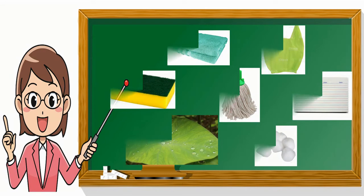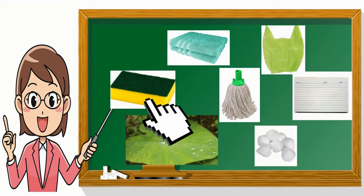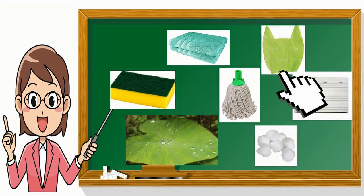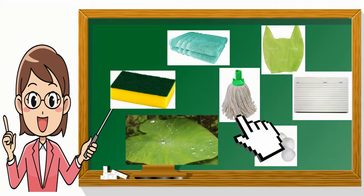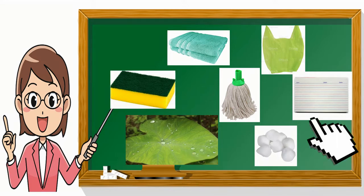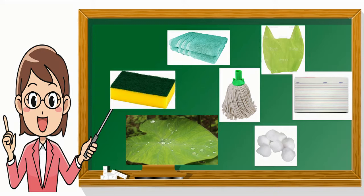Let's name them. We have the sponge, the towel, the cellophane, the mop, the leaf, cotton, and paper. Those are examples of materials that absorb water, and there are also examples of materials that don't absorb water.